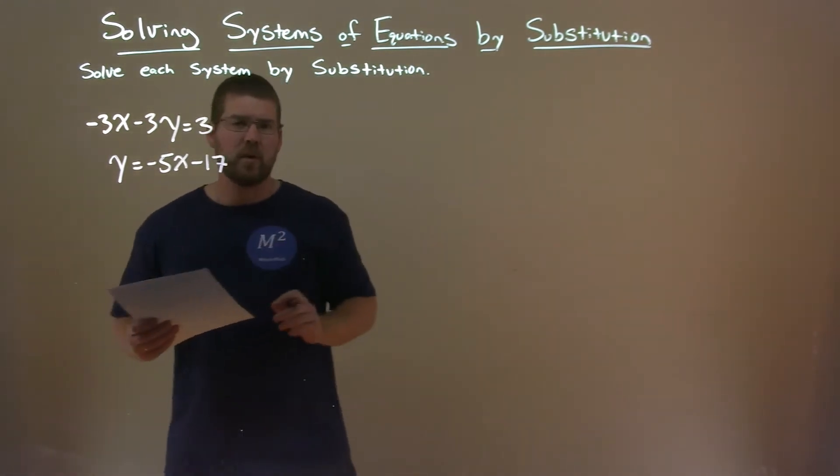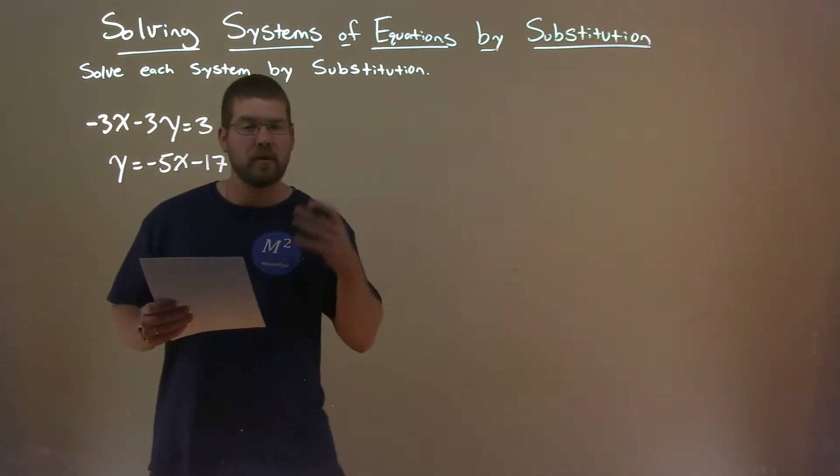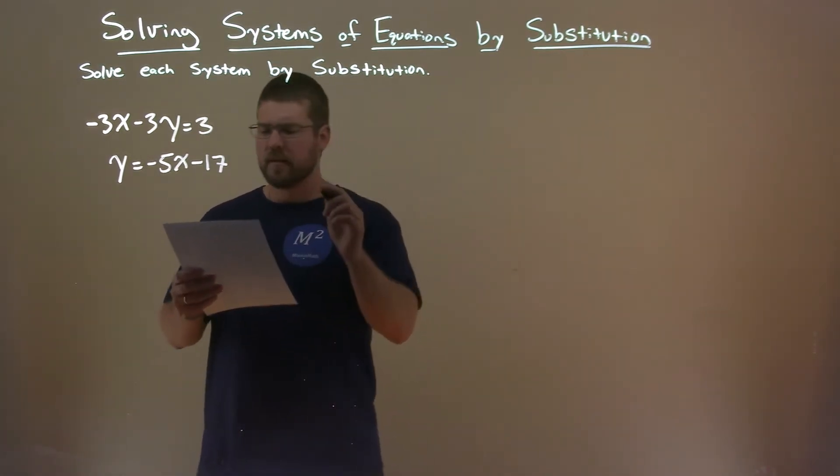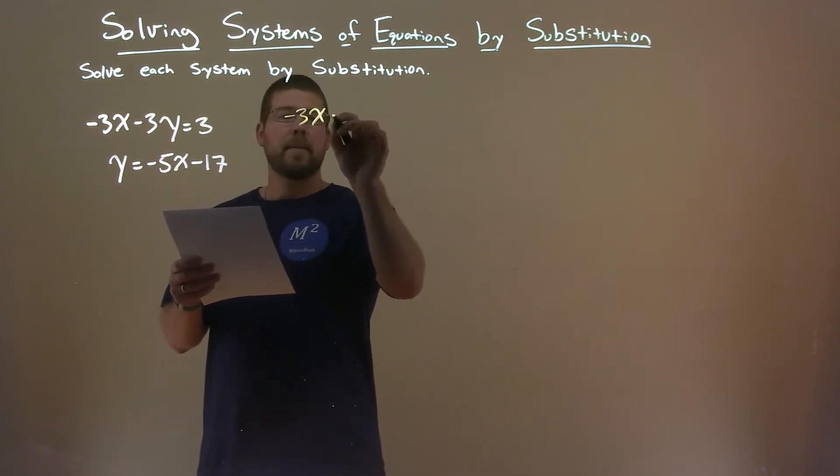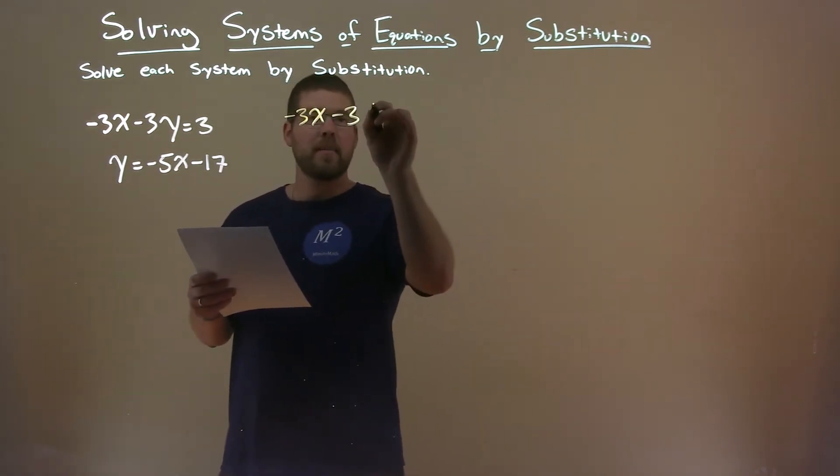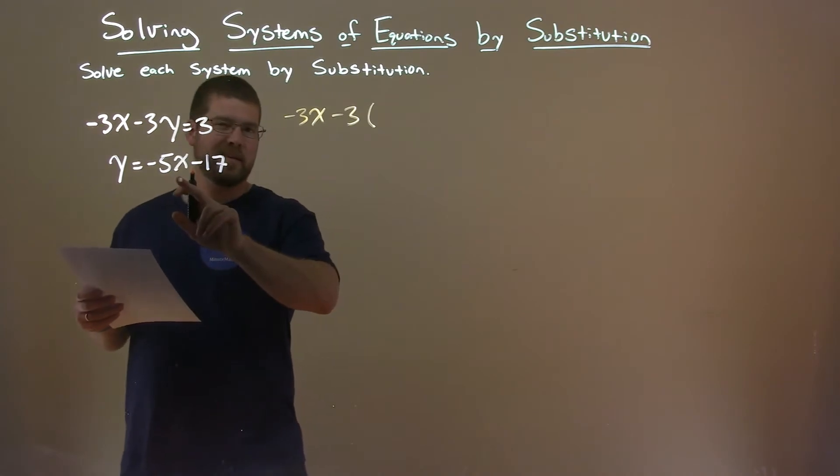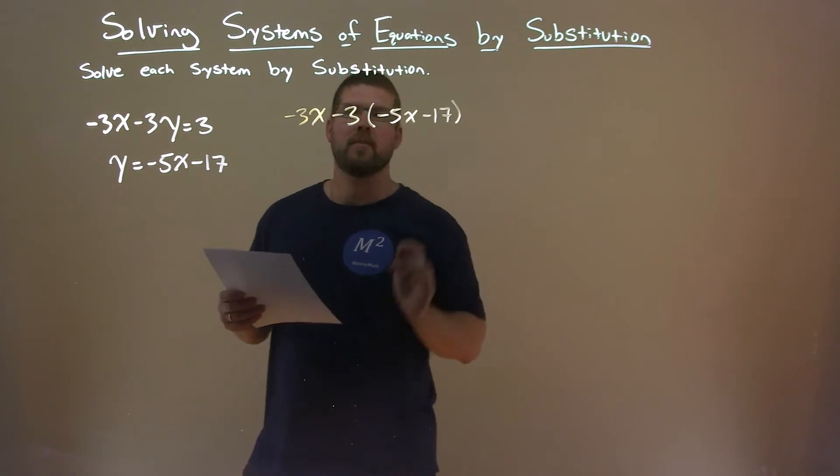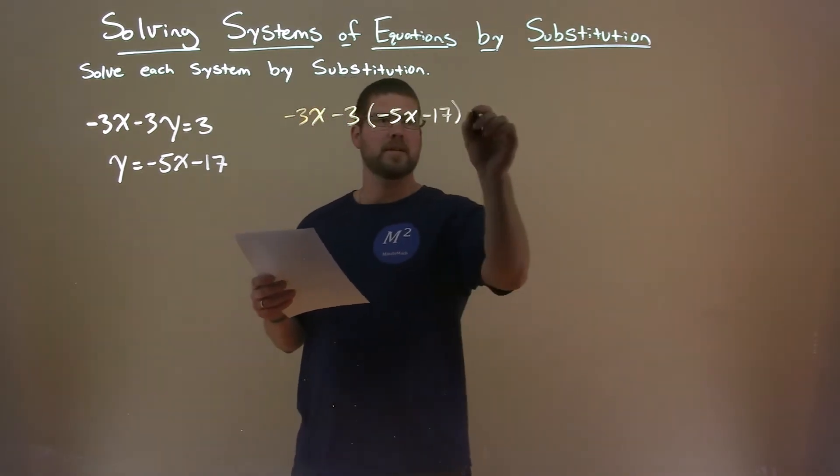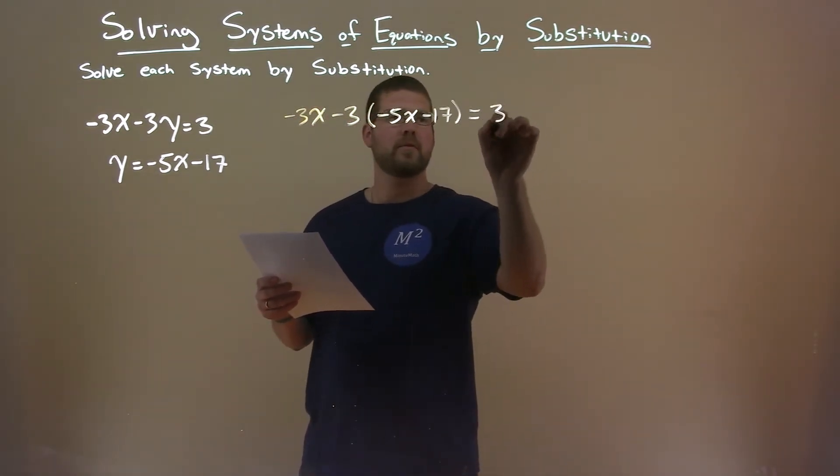We can see the second equation already has y by itself, so we're going to use that to our advantage. We take the first equation, minus 3x minus 3, and then y, but instead of y, we're going to plug in this part here, minus 5x minus 17 from the second equation. We continue the first equation, that equals 3.